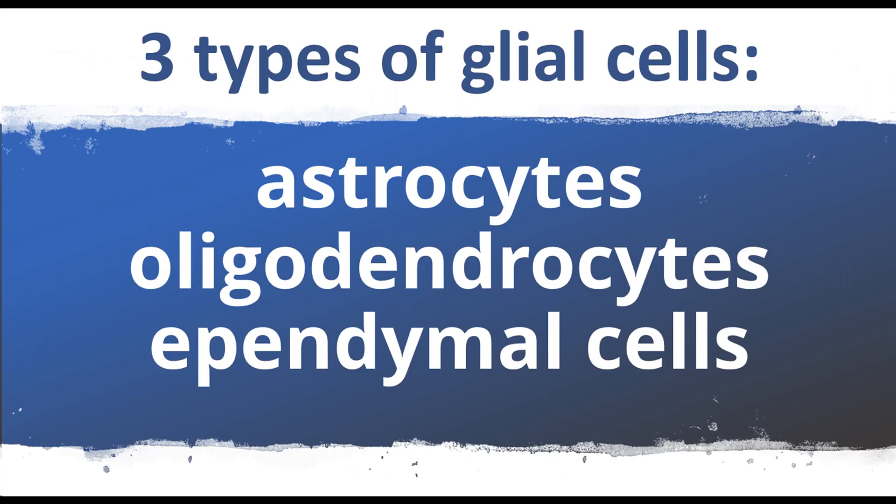Gliomas are brain tumors derived from glial cells. There are three types of glial cells: astrocytes, oligodendrocytes, and ependymal cells.